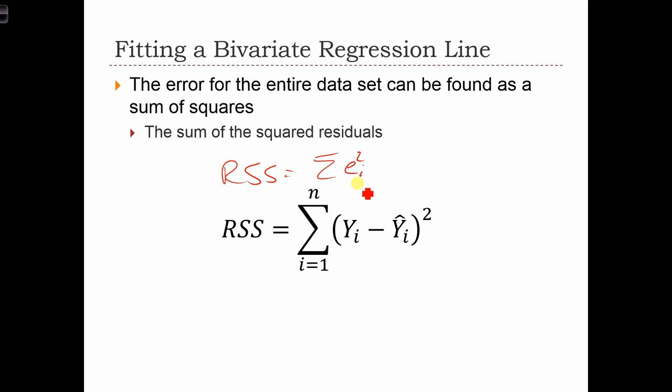So all we've done here is instead of EI squared, we've plugged in for EI what the residual is, because the residual equals YI minus Y hat I. So we've just plugged that in over here. And now we have this quantity. This quantity is just the sum of all the squared residuals.